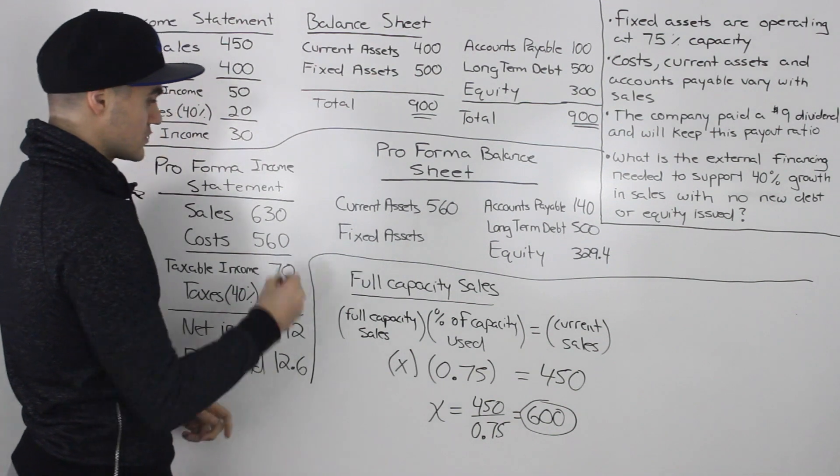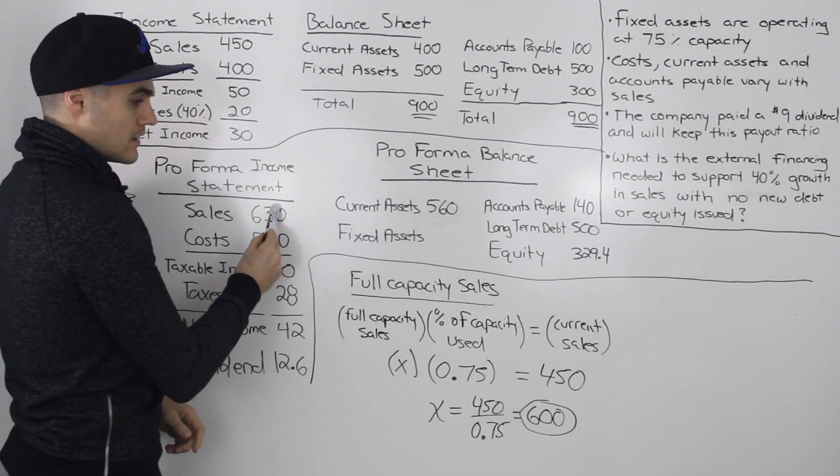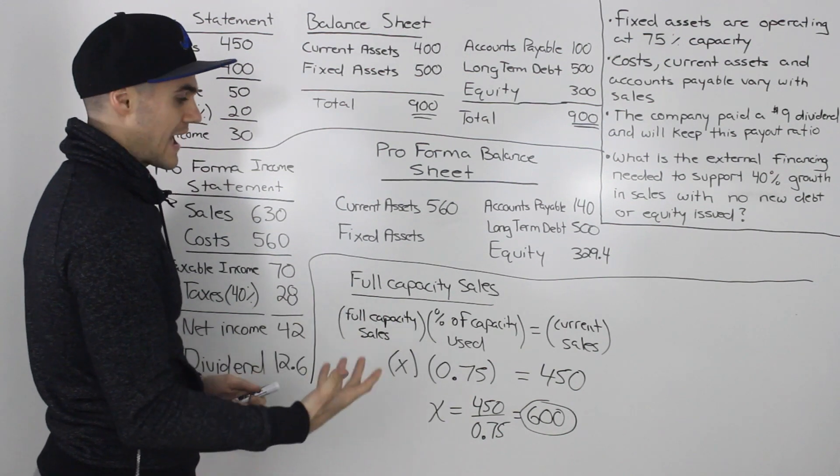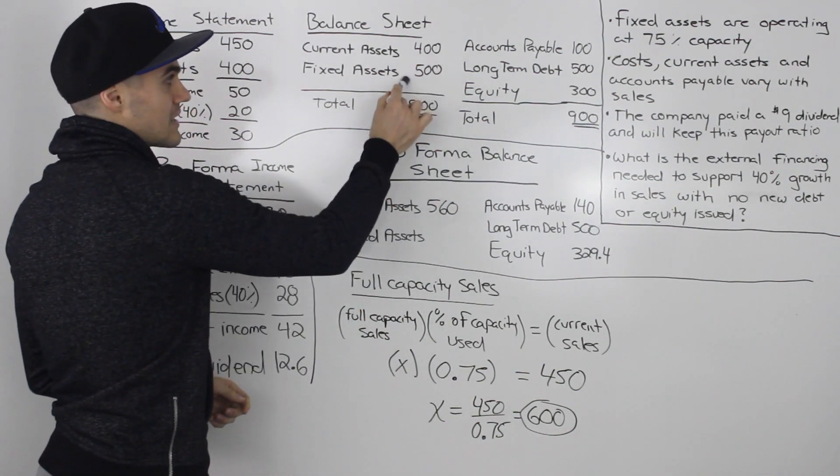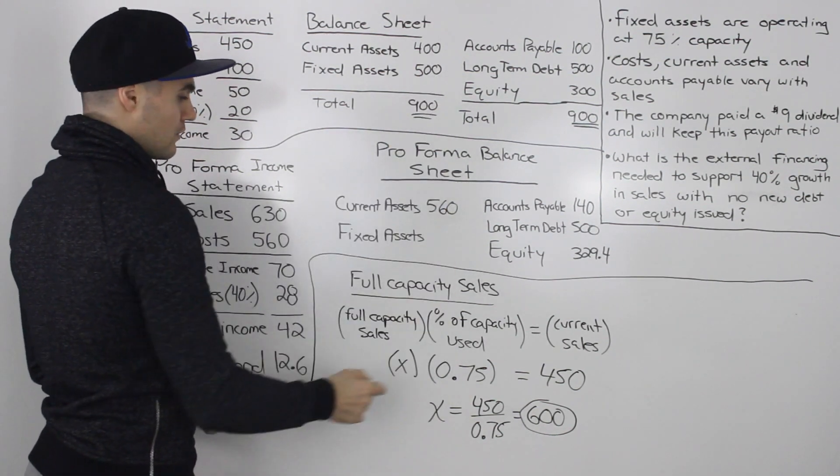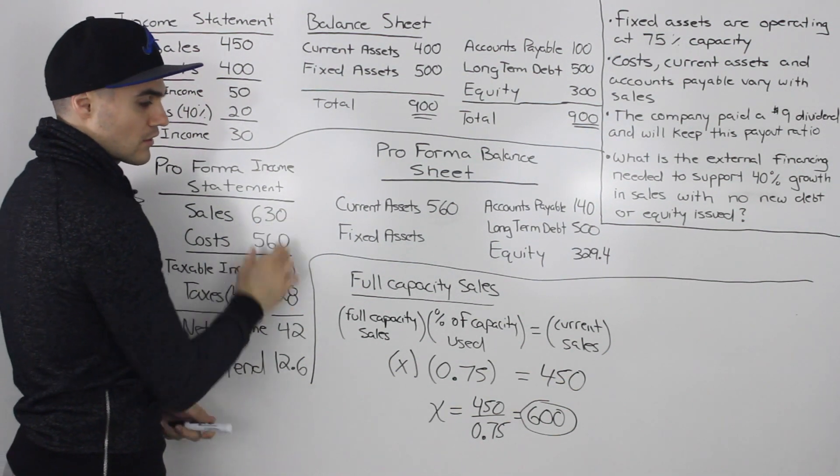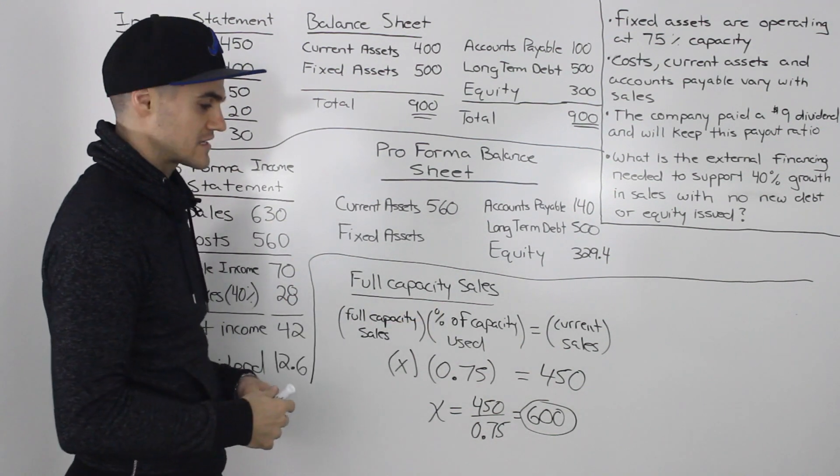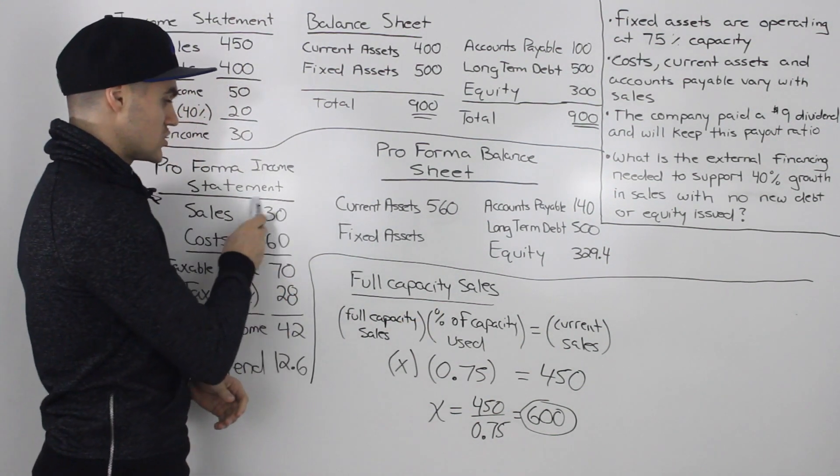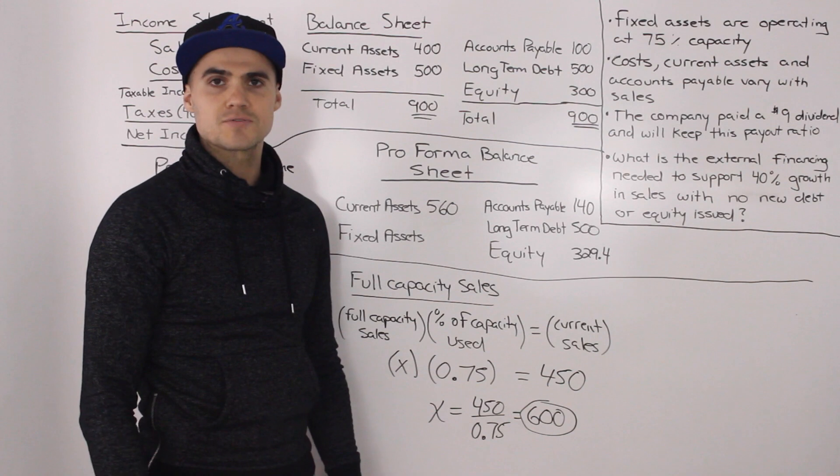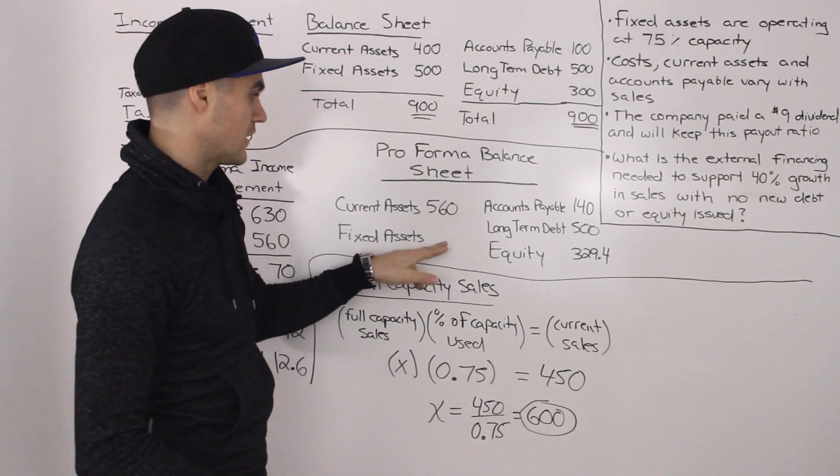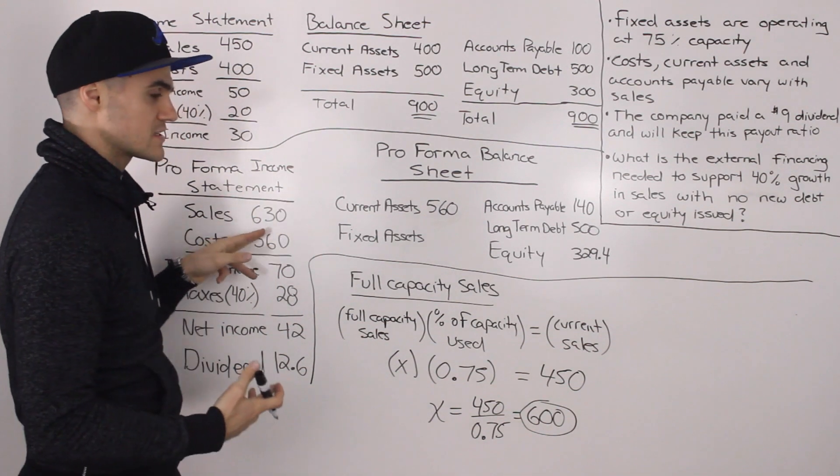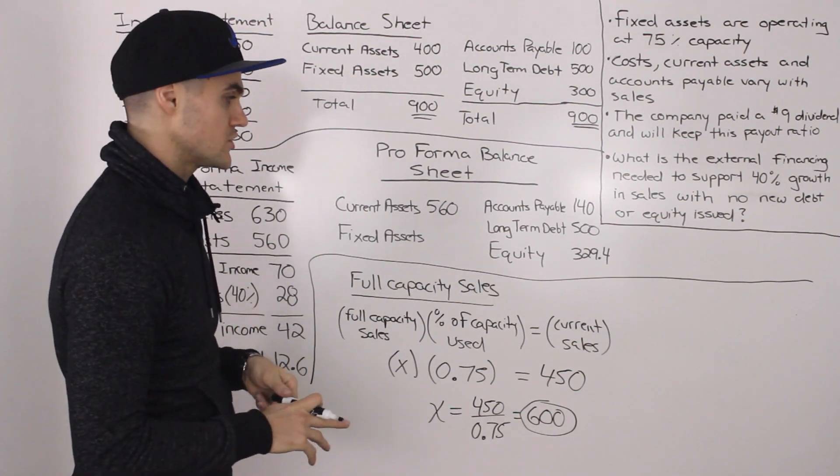However, we want our sales to grow to 630. So it's obvious that we're going to have to buy new fixed assets because the current assets that we have of 500, they're not capable of generating 630. They're only capable of generating 600. So we need to add on to fixed assets to be able to generate that sales figure. And as we did in the previous example, to figure out that new fixed assets figure to generate $630 worth of sales, we're going to have to use ratios.